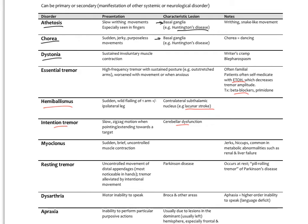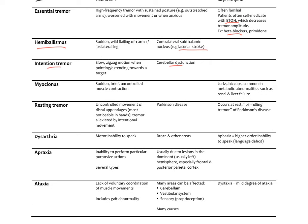Myoclonus is a sudden, brief, uncontrolled muscle contraction — like a hiccup or muscle jerk. This is typically more of a metabolic issue, possibly a local electrolyte problem that could signify deeper liver and kidney metabolic issues needing workup. Simple muscle jerks and spasms are usually no problem, but continued myoclonus warrants investigation.